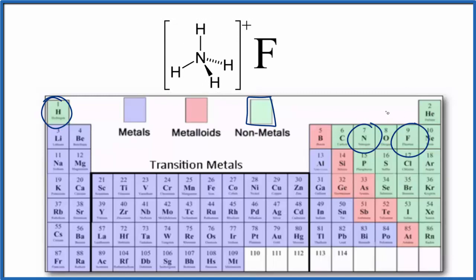Fluorine is in group 17, sometimes called 7A. It's a halogen with a one minus charge.